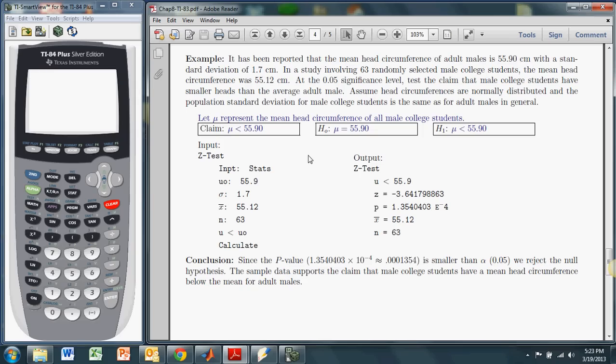Okay, so we need to set things up right, because even when we're using the TI, the setup is very critical. So in this case, we're claiming that the mean head circumference of all college students is less than that for adult males. So we're claiming that the mean is less than 55.90.